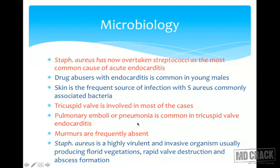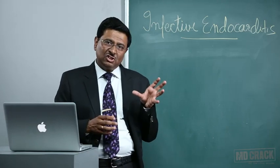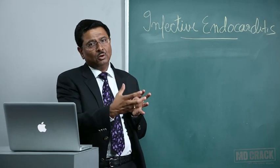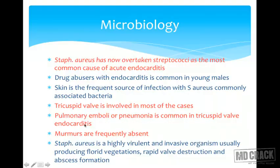Pulmonary emboli or pneumonia are common in tricuspid valve endocarditis, as vegetations can travel forward into the pulmonary circulation. Importantly, murmurs are frequently absent in IV drug abusers suffering from infective endocarditis — a very characteristic and MCQ-relevant feature. Staphylococcus aureus is highly virulent and invasive, usually producing florid vegetations leading to rapid valve destruction and abscess formation.